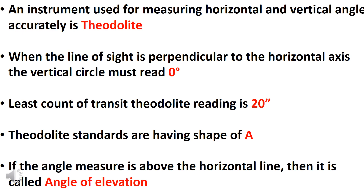If the angle is above the horizontal axis, it is called the angle of elevation. If we measure above the horizontal line, the value is positive. If we measure below the horizontal line, it is the angle of depression, and the value is negative.